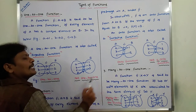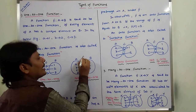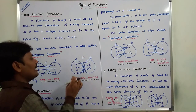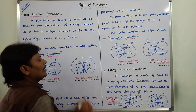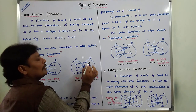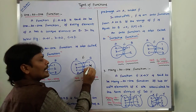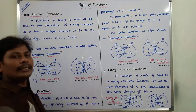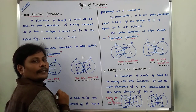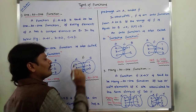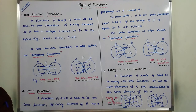Now consider this example. A and B are two sets. A has the elements a, b, c, d and B has elements 1, 2, 3. A has a unique element 1 in set B, b is associated with unique element 2 in set B, c has unique element 3 in set B, and d is also associated with element 3 in set B.